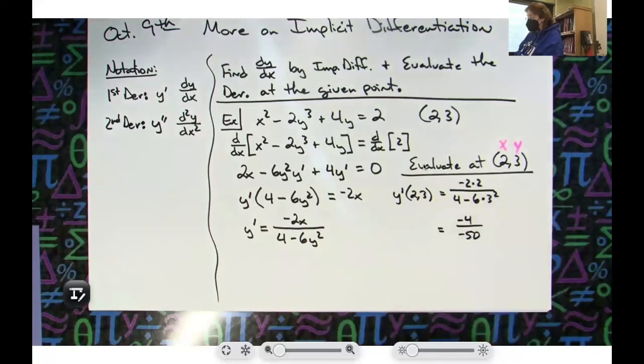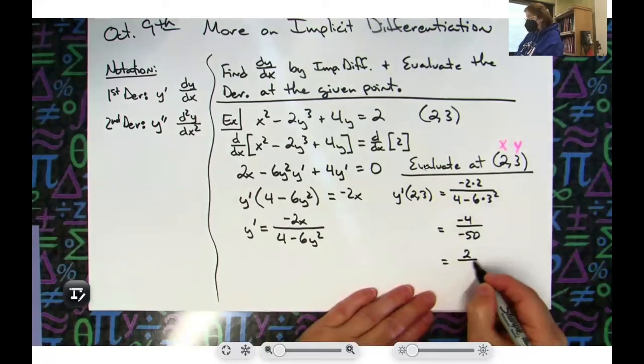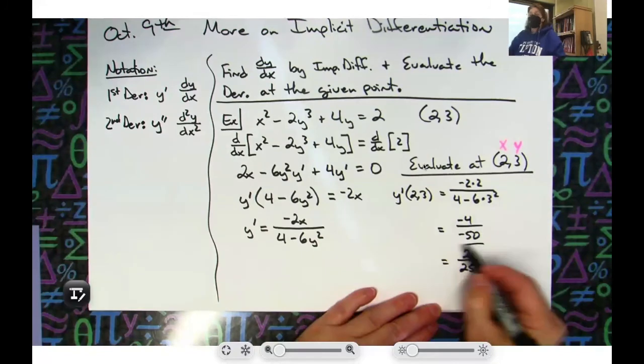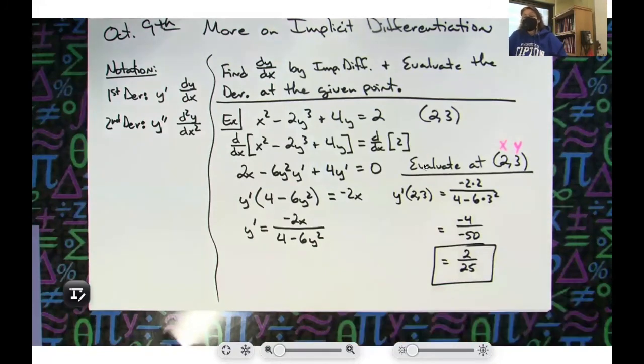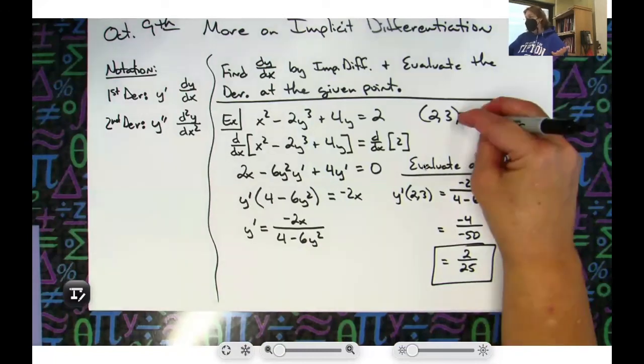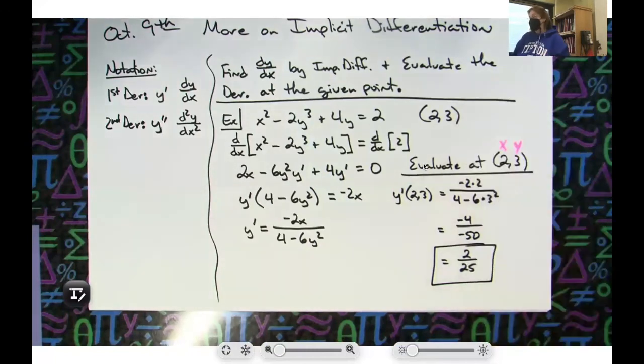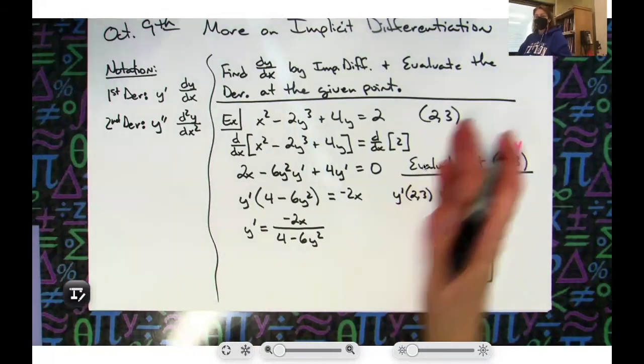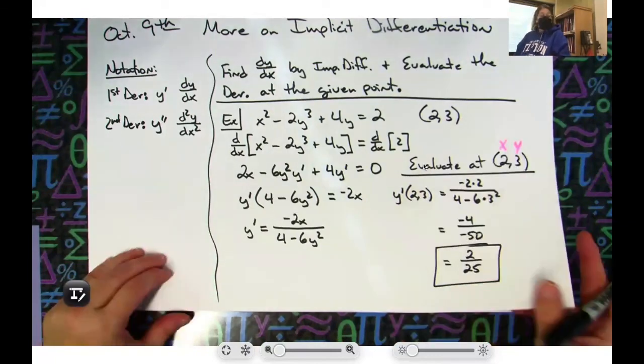And reduce to lowest terms, 2 over 25, which is what they asked for. And then technically at that point, couldn't I write the equation of the tangent line? Because I've got the slope and at that point I've got a point, so I could write the equation of the tangent line if I wanted to, but that's not what the direction said. Okay, so that was just kind of a little review thing. Are we good? Not really a review, but applying a concept we already knew how to do into that implicit differentiation.